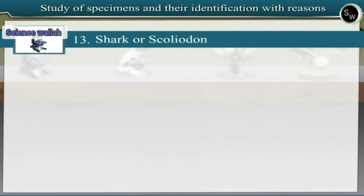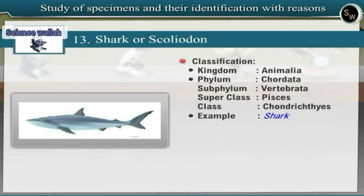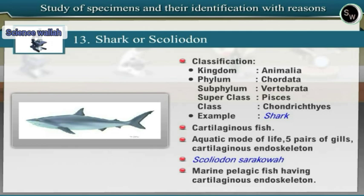Specimen 13: Shark (Scoliodon). Observe the specimen of shark. Shark belongs to phylum Chordata, subphylum Vertebrata, superclass Pisces and class Chondrichthyes — meaning cartilaginous fish. Shark displays all characters of cartilaginous fish such as aquatic mode of life, five pairs of gills, and cartilaginous endoskeleton, hence it is included under class Chondrichthyes. The scientific name of shark is Scoliodon sorrakowah. Shark is a marine, pelagic fish having cartilaginous endoskeleton, with a laterally compressed, streamlined, elongated body tapering at both ends. The mouth is ventral. The exoskeleton is of placoid scales.